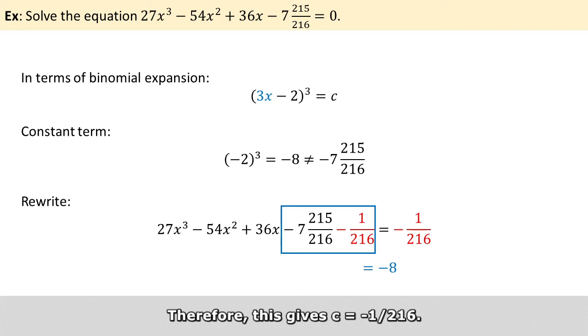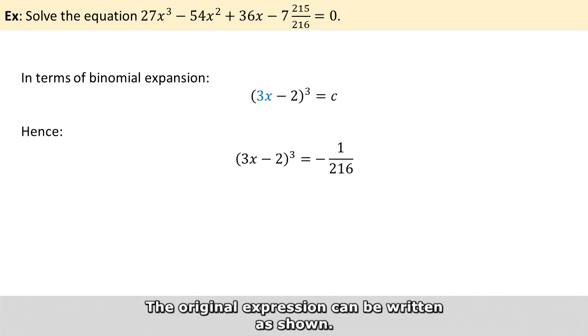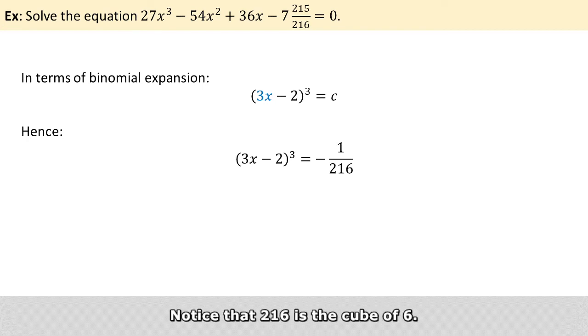Therefore, this gives us c equals minus 1 over 216. And the original expression can be written as shown. Notice that 216 is actually the cube of 6.